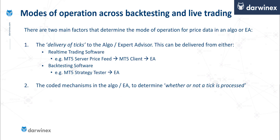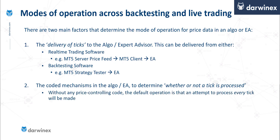The second factor that determines the mode of operation of price data is any coded mechanisms within the algo or the EA which determine whether or not a tick that's being delivered is actually processed. Without any price controlling code in the EA, the default operation is that every tick that's delivered to the EA will be processed.